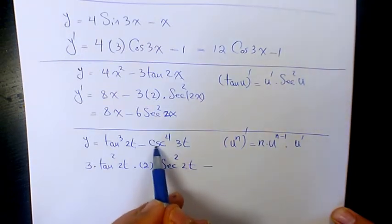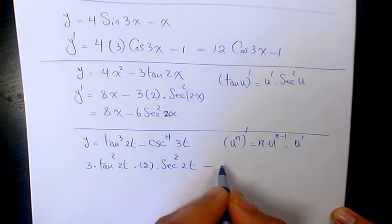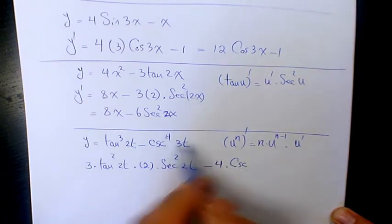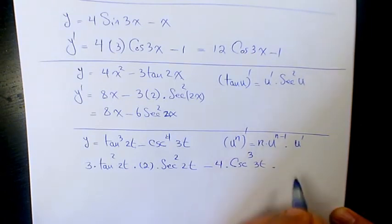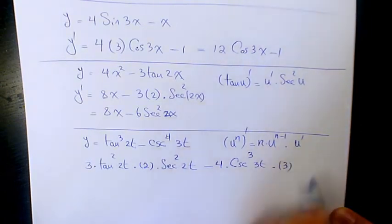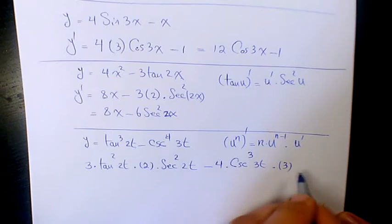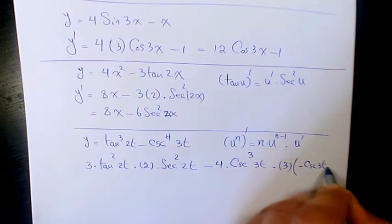Minus the derivative of cosecant to the power of 4 of 3t: that will be 4 times cosecant cubed 3t, times 3 times the derivative of cosecant, which is negative cosecant 3t times cotangent 3t.